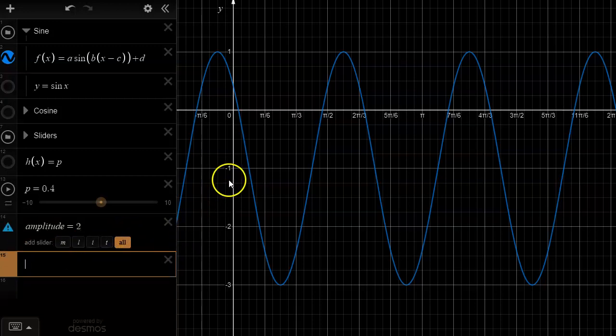To figure out the b value, remember b is not the period. What we actually have to do is figure out the period and then put it into this formula. The b value equals 2 times pi divided by the period.